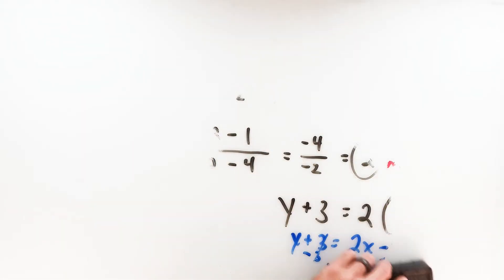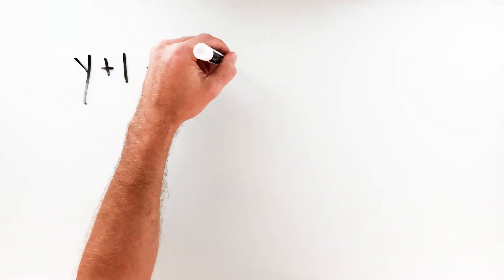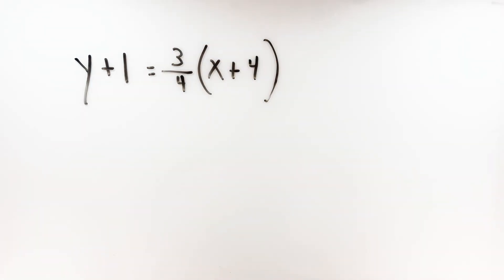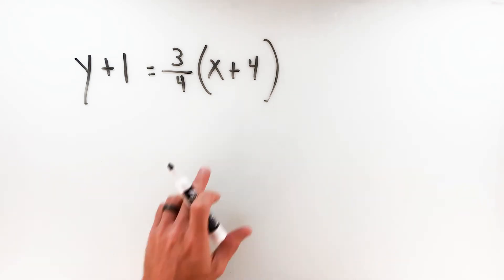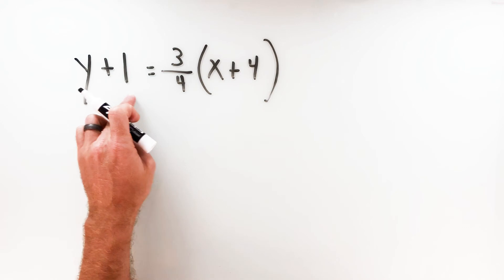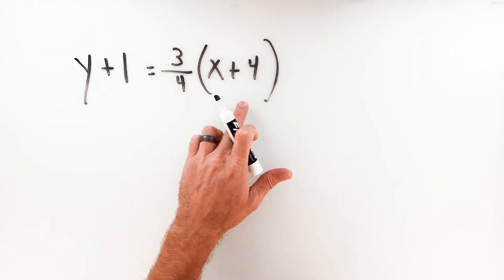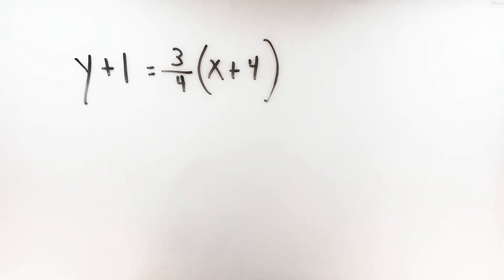Now let's do some graphing. Just like with slope-intercept form, we can graph lines that are in point-slope form — we just extract the information we need from the equation and put it on the graph. Let's say we have a line in point-slope form: y plus 1 equals three-fourths times x plus 4. To graph this, I need two points to create a line. I already have one point from the point-slope form, because the values in the equation give me a point on the line.